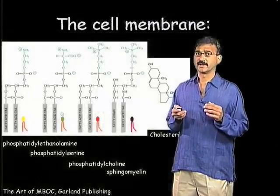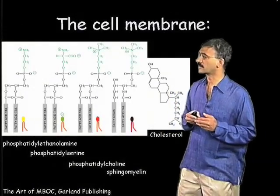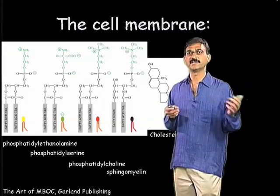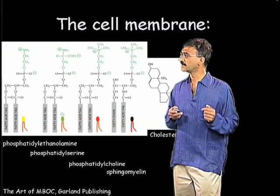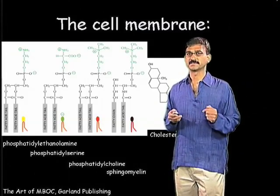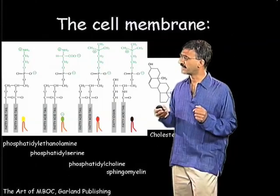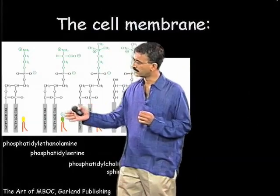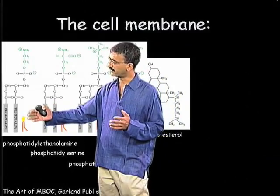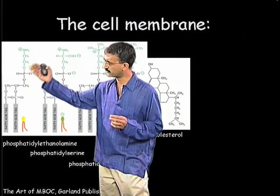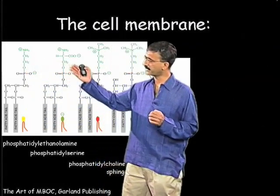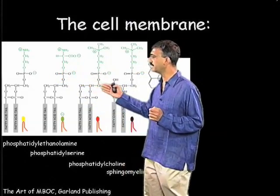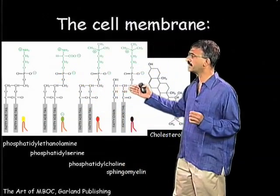The cell membrane has a particular chemical composition. In fact, it is made up chiefly of lipids. There are about 500 types of lipids, and there are several classes of these 500 types. These are defined by the head group of the lipids. Phosphatidylethanolamine is one type, phosphatidylserine, choline, and sphingomyelin is another type of lipid.